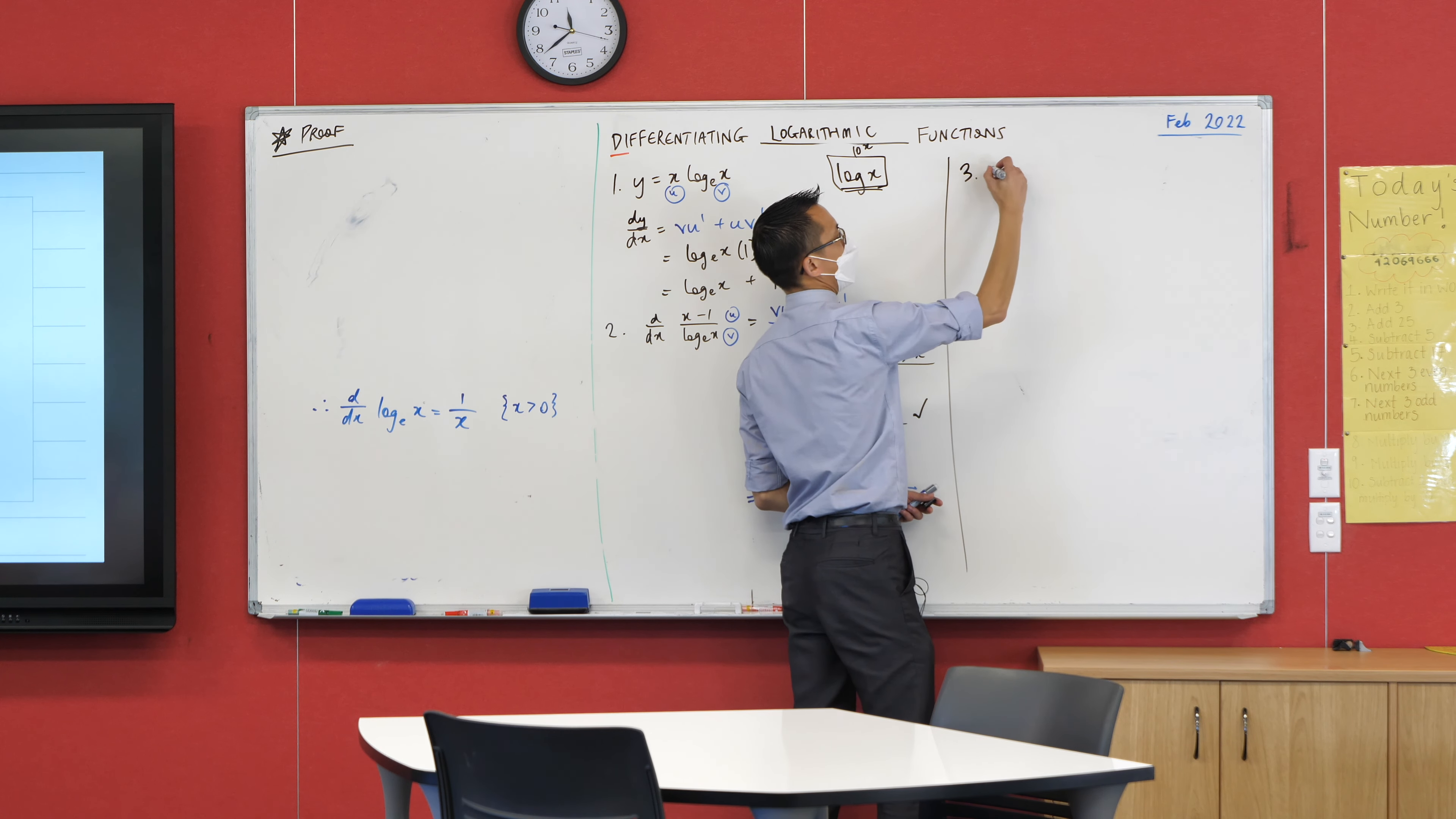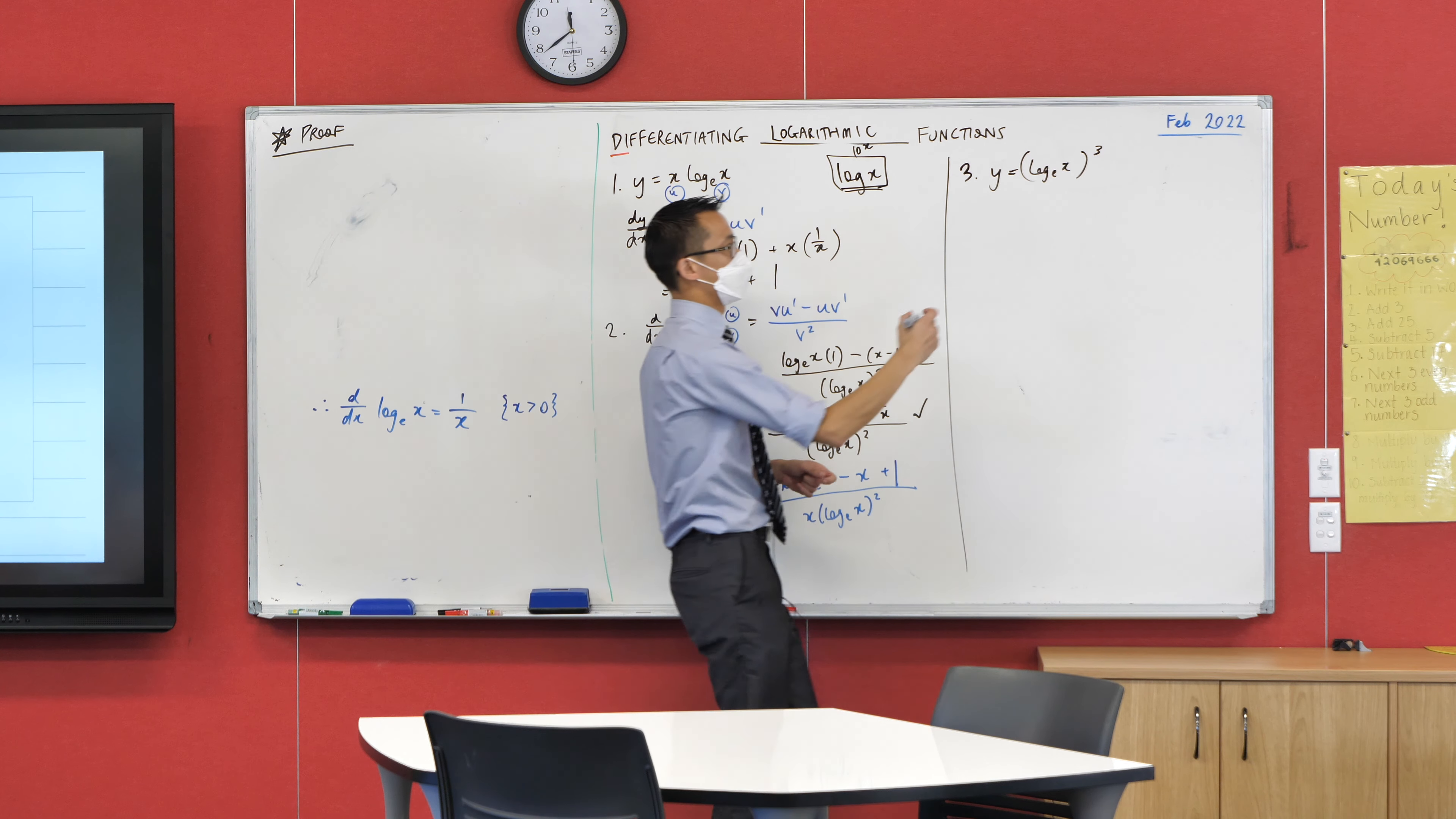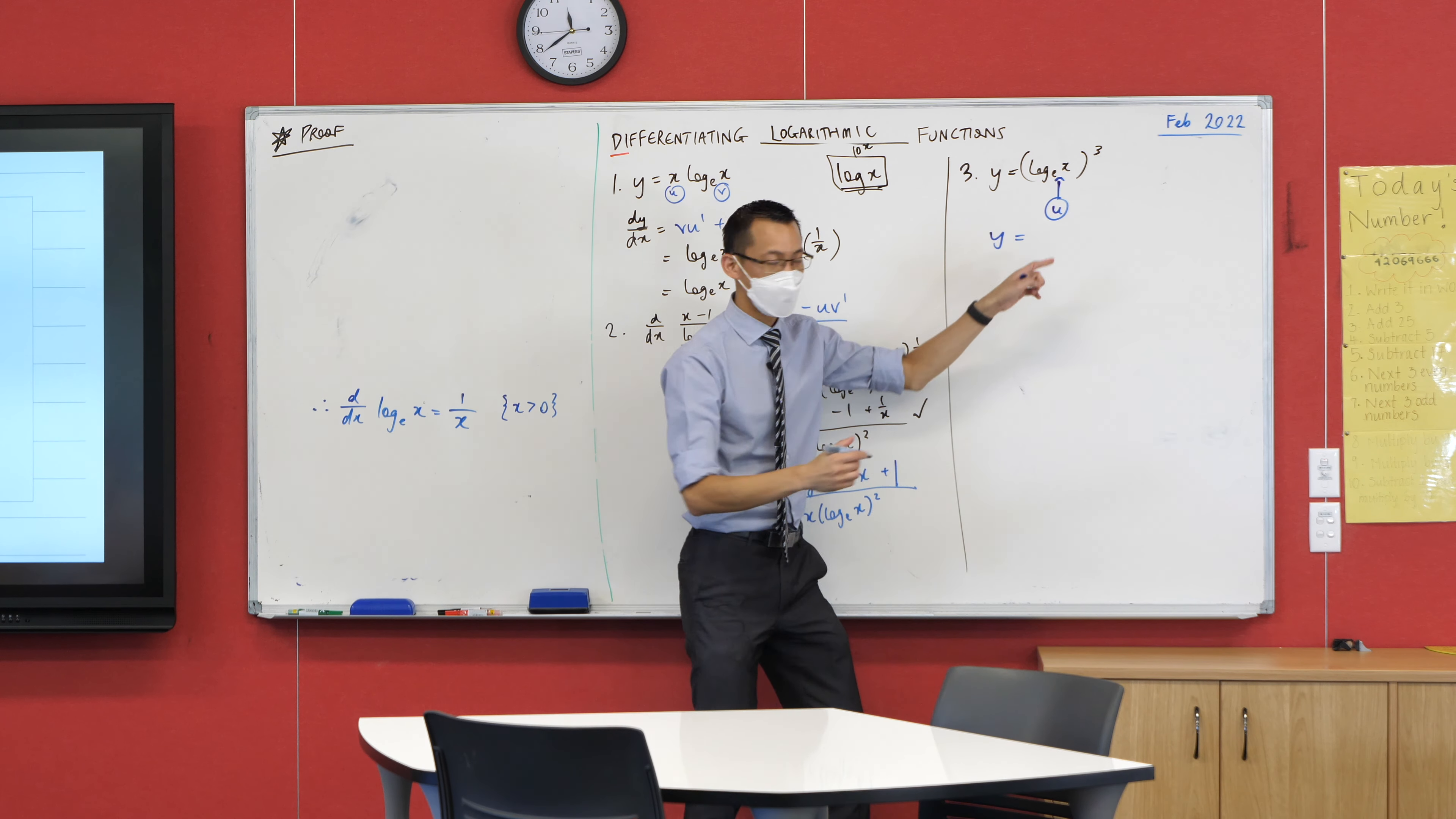It's log X and it's all cubed. Now at this point, it may help you to do chain rule fully, right? Because we're pretty good at that if we do our notation properly. So what I'm going to do is I'm going to call this U. Now, having done that, I then need to work out what this whole thing is. Y equals U cubed.